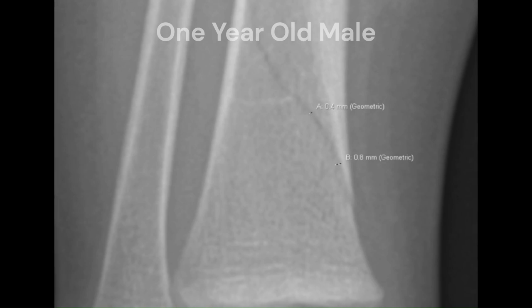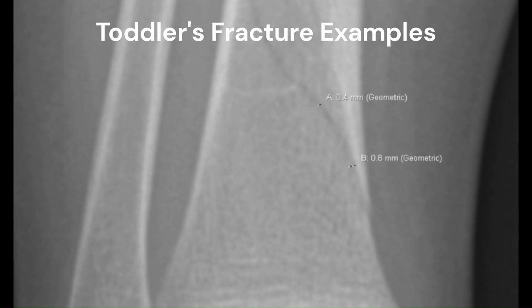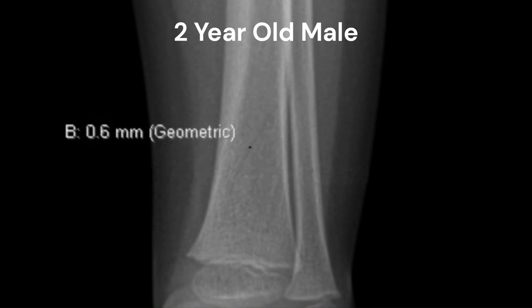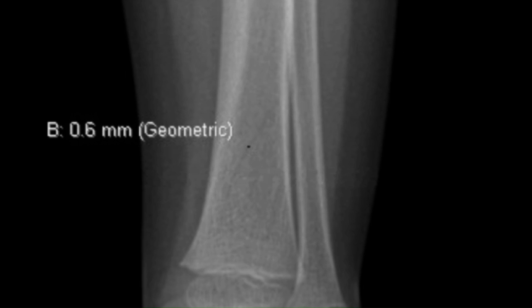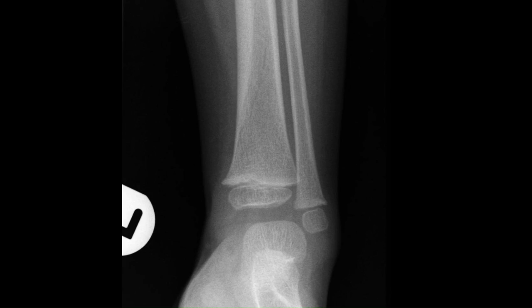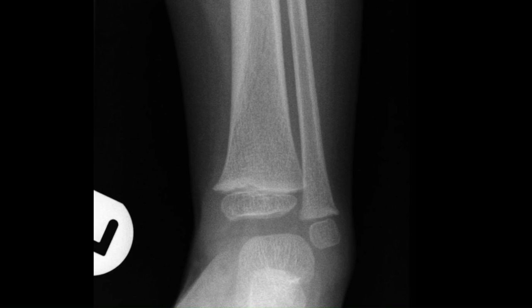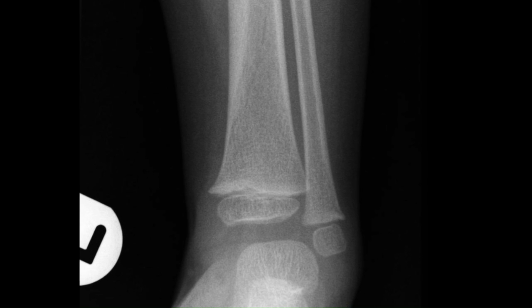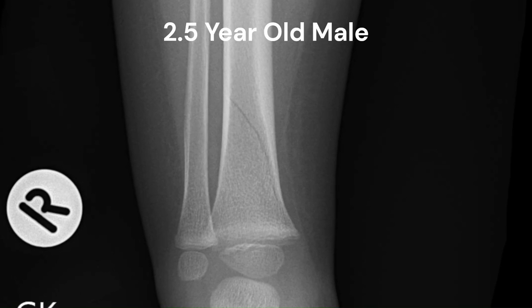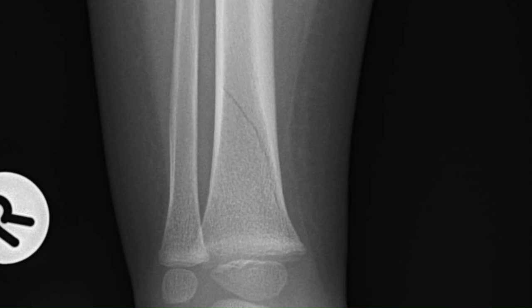This series of radiographs shows toddlers with distal tibial, radiologically obscure, spiral fractures that fit the original definition of the toddler's fracture. As you will notice, it is much more difficult to visualize these fractures. The management of these very stable fractures in the emergency department is increasingly less aggressive. In fact, it is increasingly clear that the classic toddler's fractures do not benefit from long-leg posterior splints with side struts.